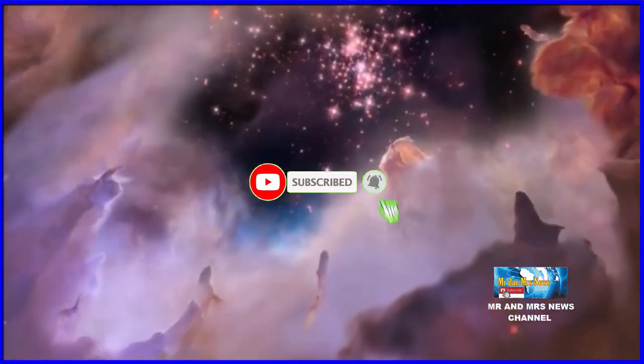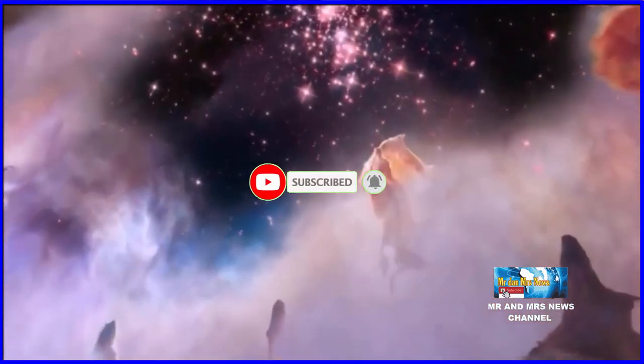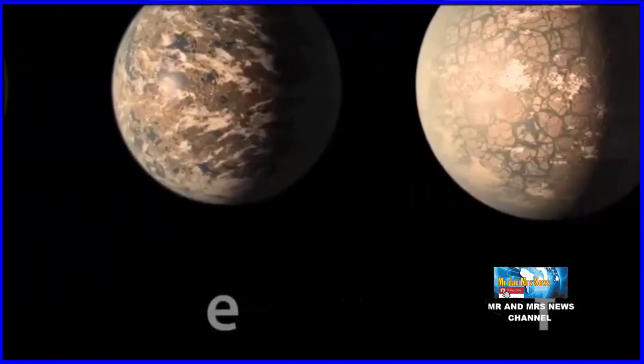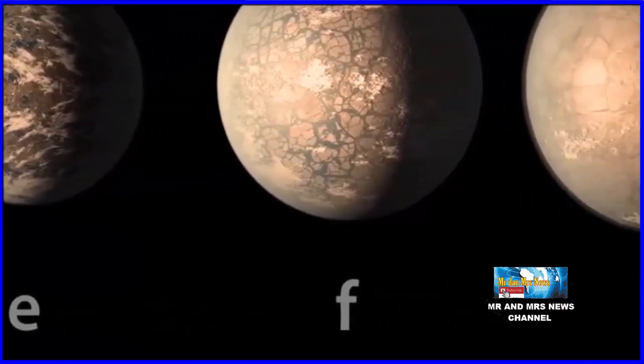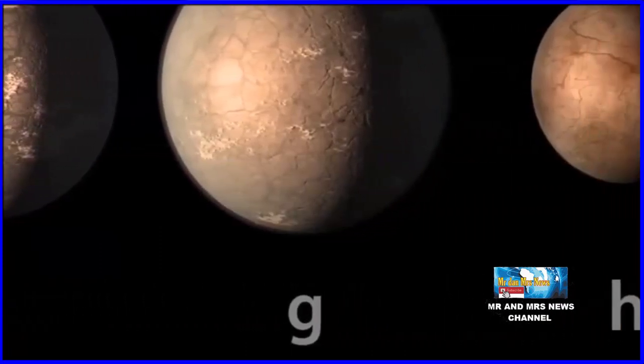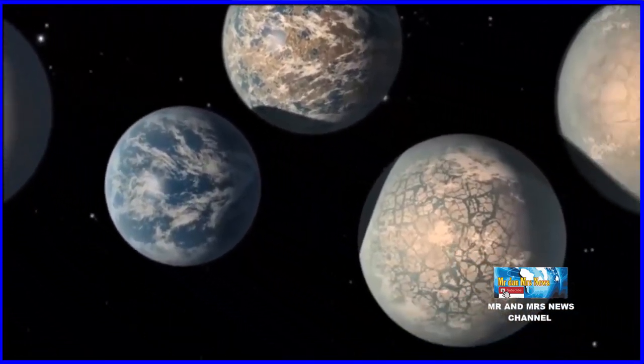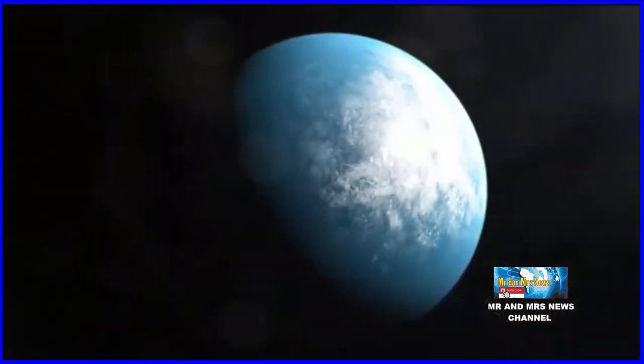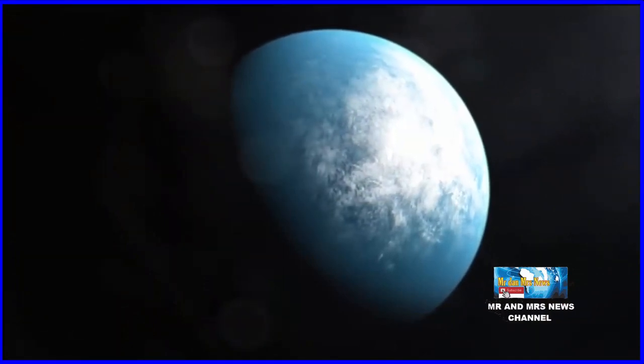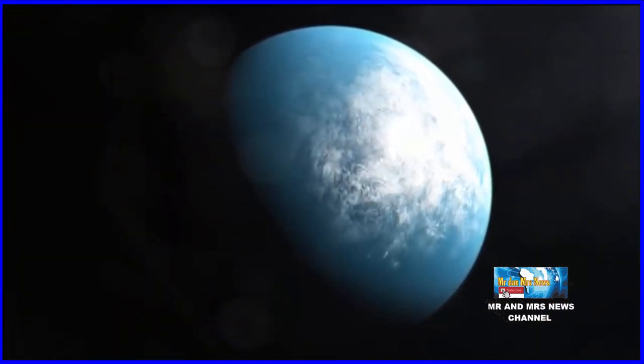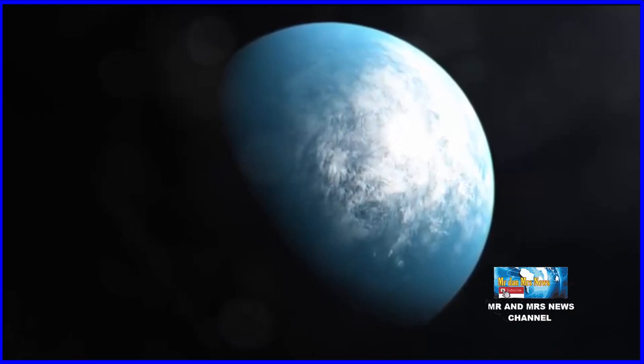Ketika mencoba menentukan seperti apa kondisinya di sebuah planet yang jauh bertahun-tahun cahaya, para astronom pertama-tama perlu menentukan apakah planet itu terletak di zona layak kuni bintangnya. Selain itu, mereka kemudian mencari tanda-tanda melukulerik untuk menyimpulkan struktur atmosfer dan internal planet yang mengatur kondisi permukaan, keberadaan lautan, dan potensi kehidupan.